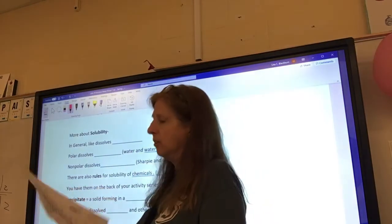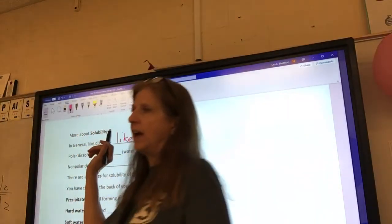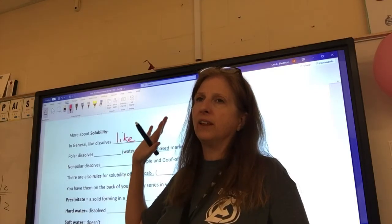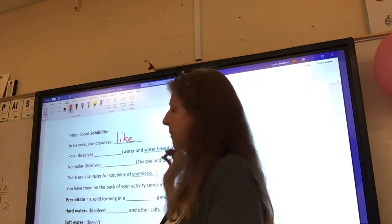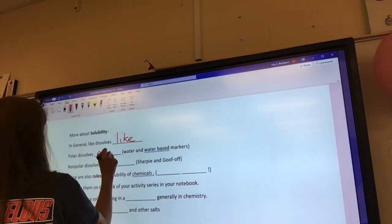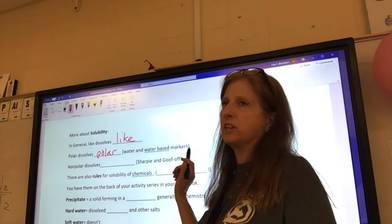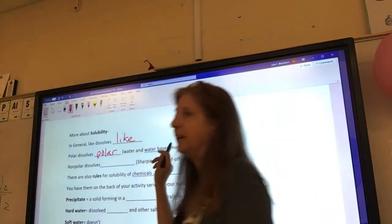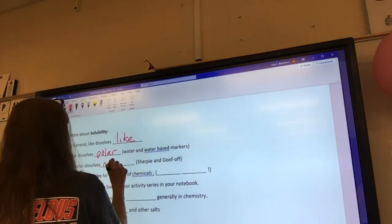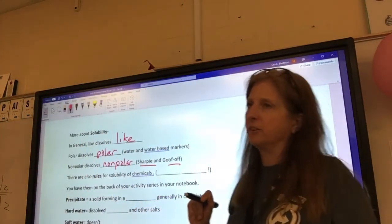And in general, the rule is, like dissolves like. So, ionic things can dissolve, be dissolved by polar. Things that are covalent and non-polar can be dissolved by non-polar. So, polar dissolves polar, and that would be water and water-based markers. You know the water-based markers, Crayola cells, that you can wash out with water? That means we know those are non-polar markers. And non-polar dissolves non-polar. So, Sharpie and Goof-Off.